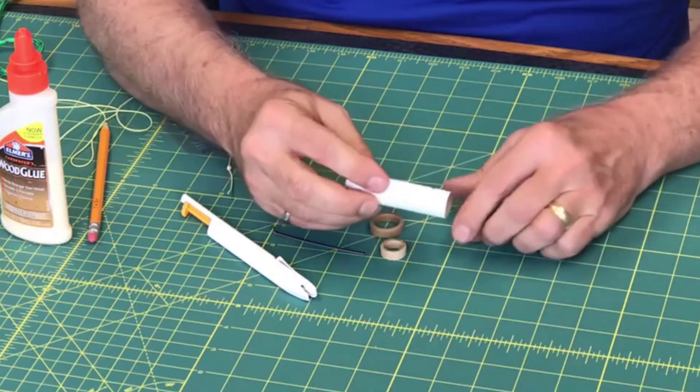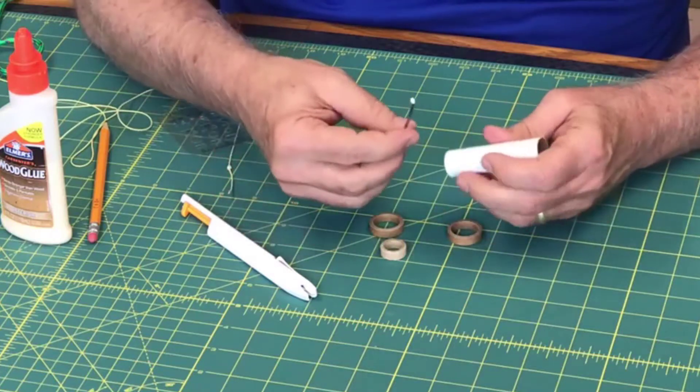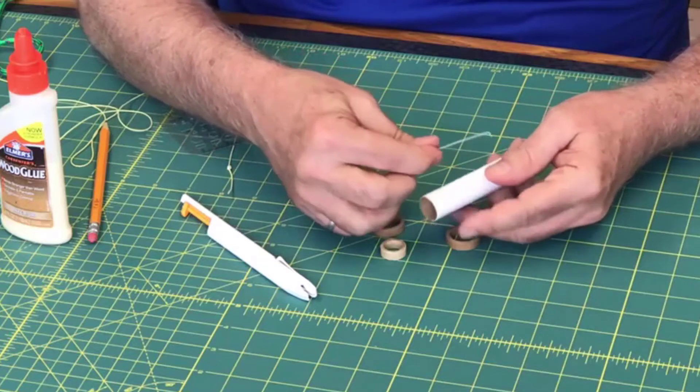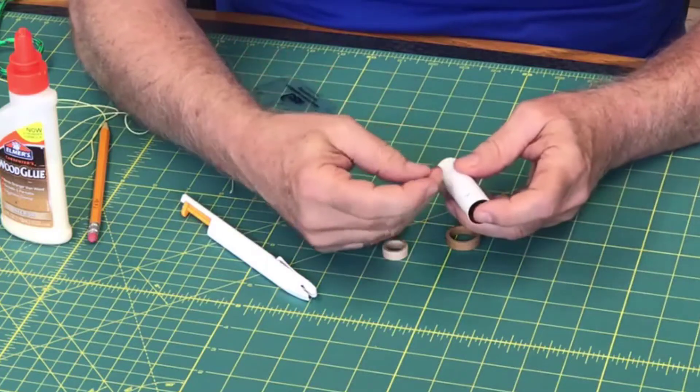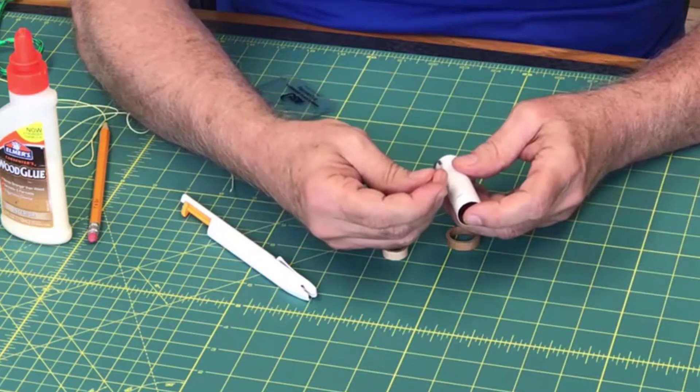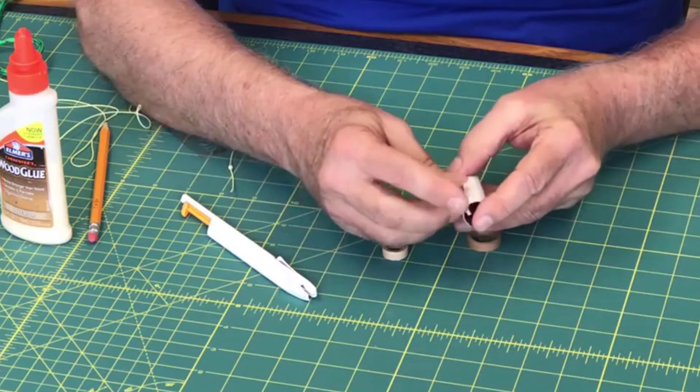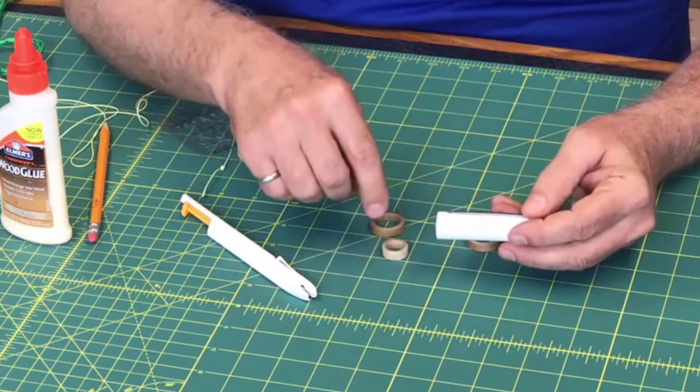Slip these two centering rings off. Okay, and now take your piece of steel for your engine clip here. Make sure it fits in that slot and slide it down here.